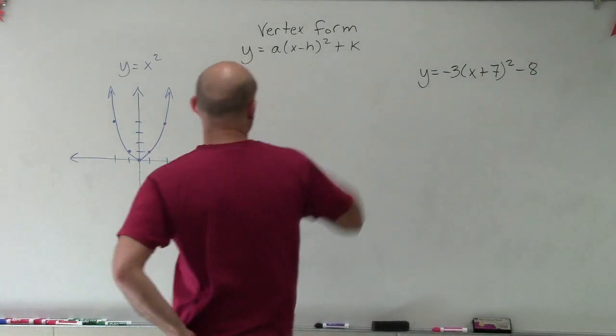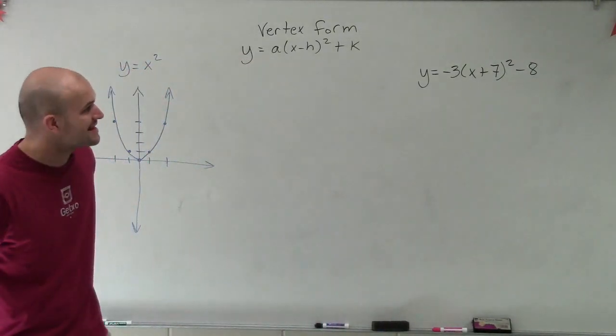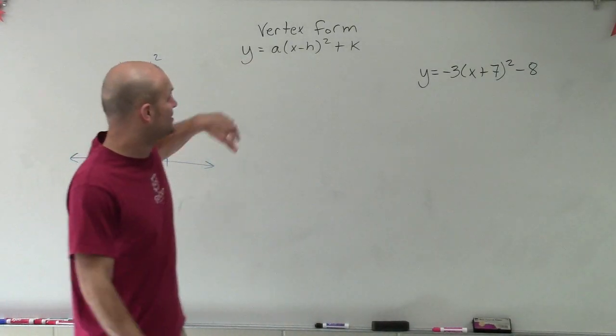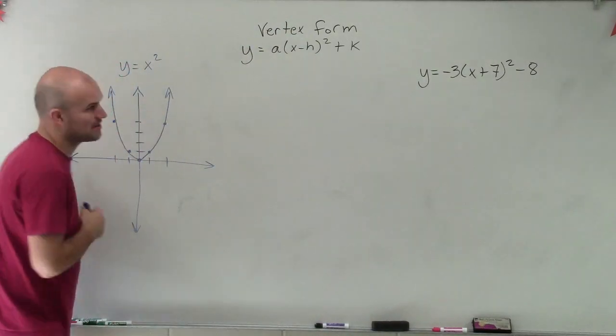OK. So what I have is y equals negative 3 times x plus 7 squared minus 8. And what I want to do is show you how to graph it by using vertex form and our lovely parabola.